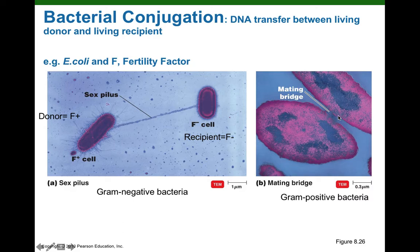Gram-positive bacteria can also carry out conjugation, but gram-positive bacteria usually don't form the long, impressive sex pilus — they usually have a smaller conjugation bridge. So we're going to focus on the gram negatives.